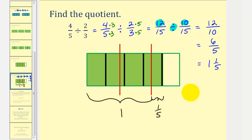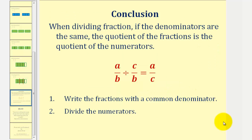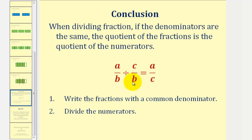Let's summarize what we've discovered. When dividing fractions, if the denominators are the same, the quotient of the fractions is the quotient of the numerators. So if we have a over b divided by c over b — denominators are the same — then this quotient equals a divided by c, or a over c. We have the option of writing the fractions with a common denominator and then dividing the numerators. I hope you find this alternative method helpful.